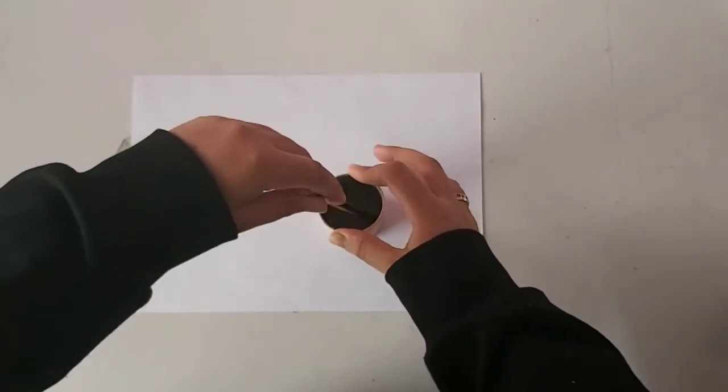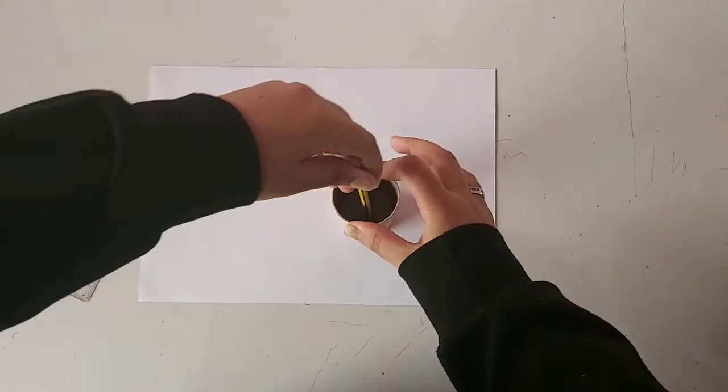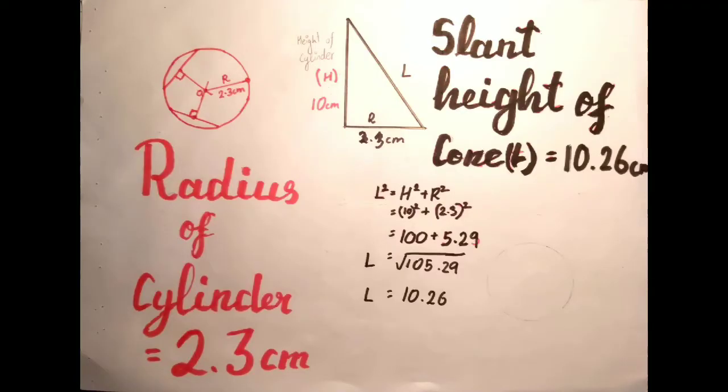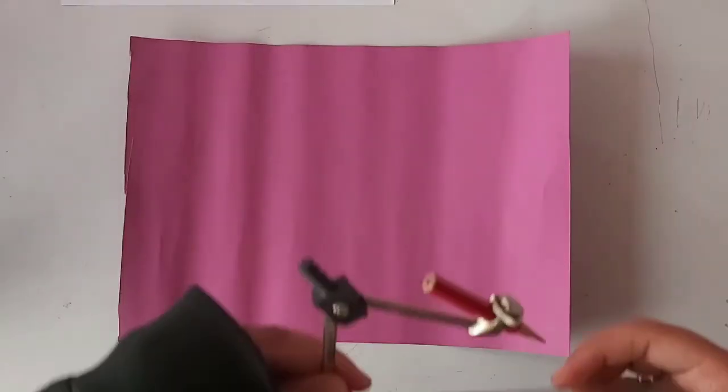We will now draw along the circumference of our cylinder. Find the radius of the circle, which is 2.3 cm, and the slant height of the cone, which in this case is 10.26 cm.